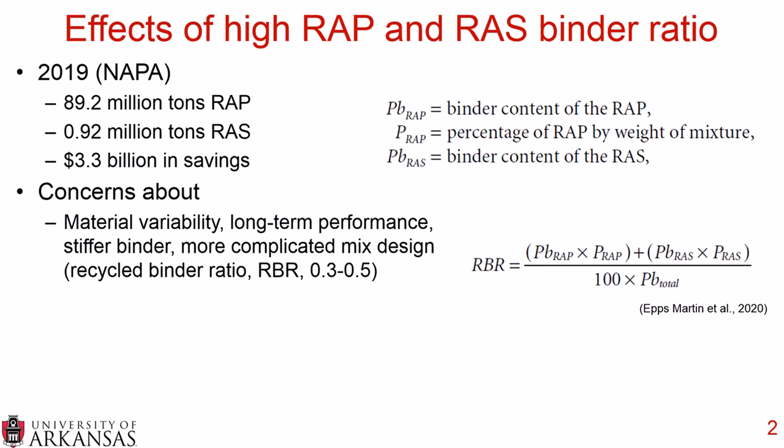The definition of the recycled binder ratio is simply the binder content of the RAP multiplied by the percentage of RAP used, added to the binder content of the RAS multiplied by the percentage of RAS used, and you divide all that by 100 times the total asphalt binder content.